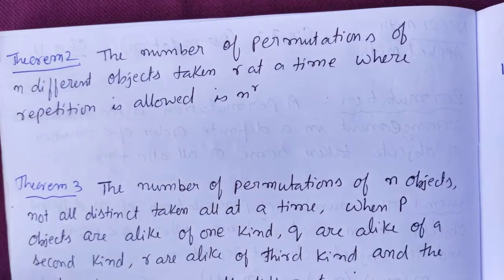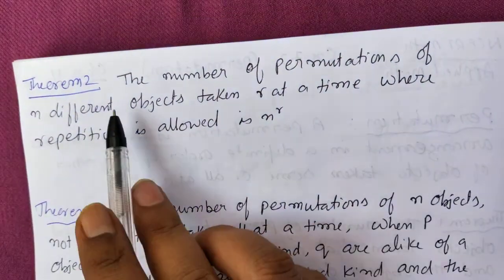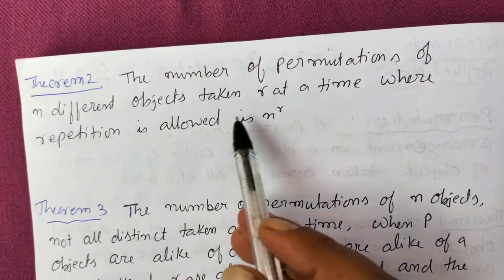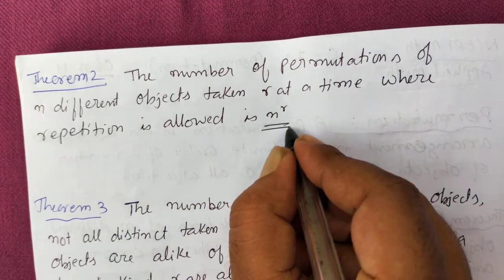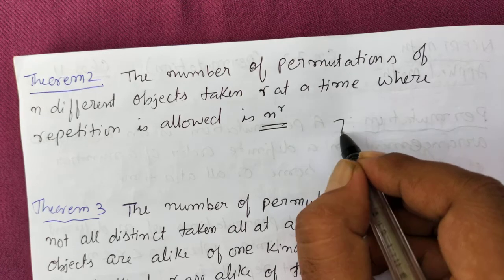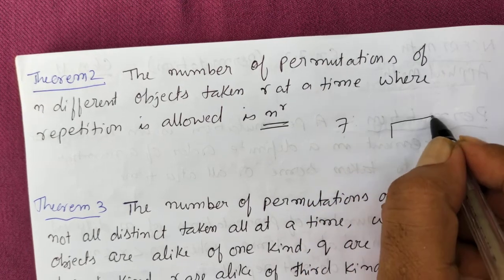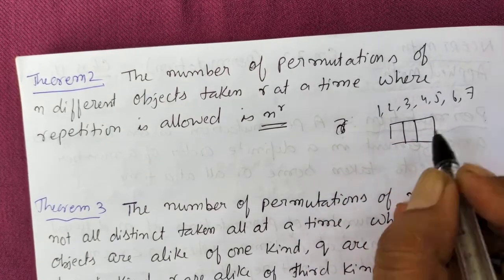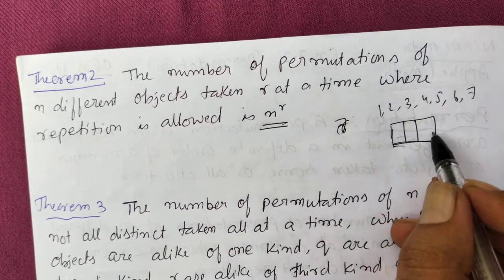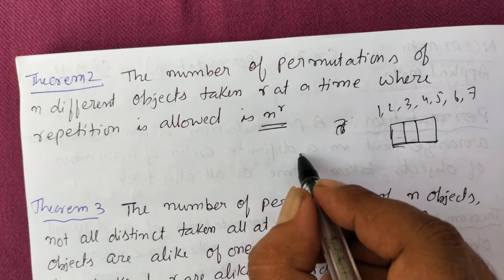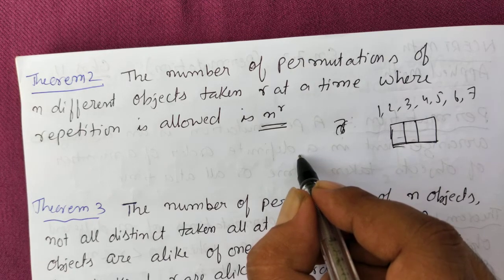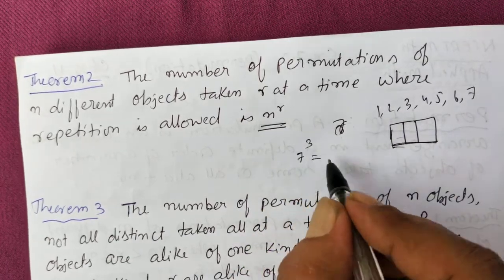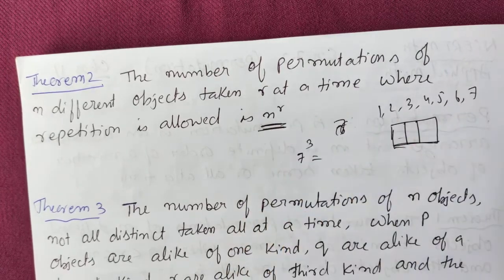Now the second theorem: the number of permutations of N different objects taken R at a time where repetition is allowed. For example, with 7 digits forming a 3-digit number with repetition allowed, the formula gives N^R, so 7^3. That is the formula when repetition is allowed.